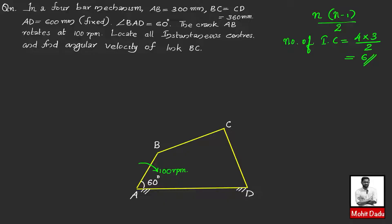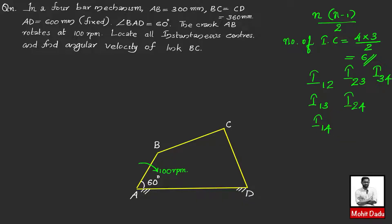We will name all six instantaneous centers. With four links, link 1 combines with links 2, 3, and 4 giving I12, I13, I14. Link 2 combines with the remaining to give I23 and I24. Link 3 gives I34. The six instantaneous centers are: I12, I13, I14, I23, I24, and I34. We must locate all of these on the four-bar mechanism.